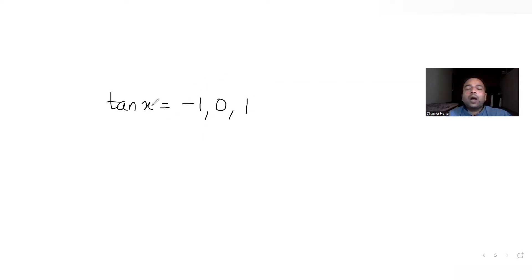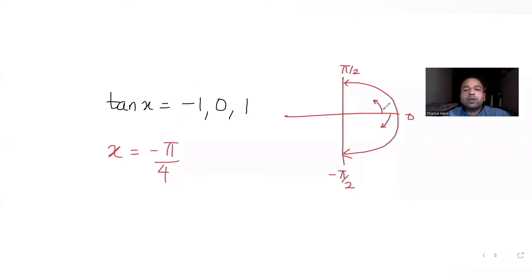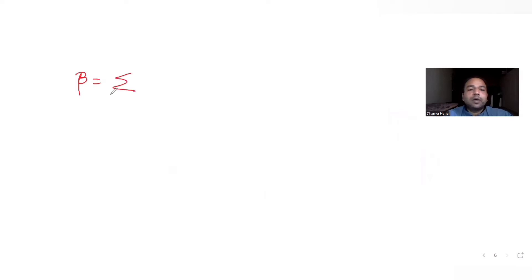Since x belongs to [-π/2, π/2], the corresponding x values are: x = -π/4 (where tan x = -1), x = 0 (where tan x = 0), and x = π/4 (where tan x = 1). These are the three values satisfying the equation.